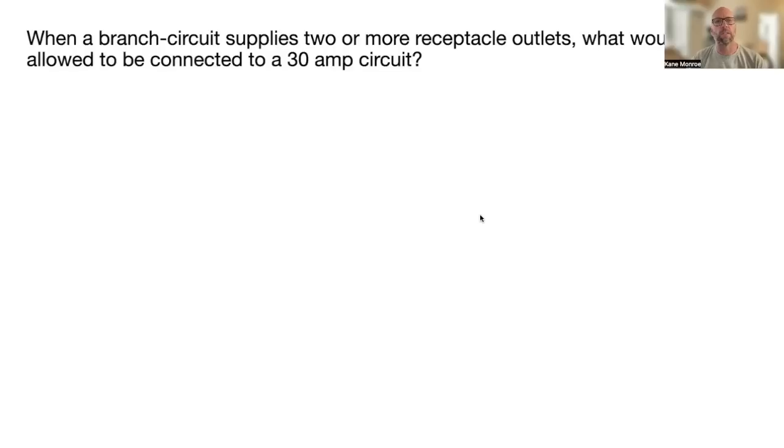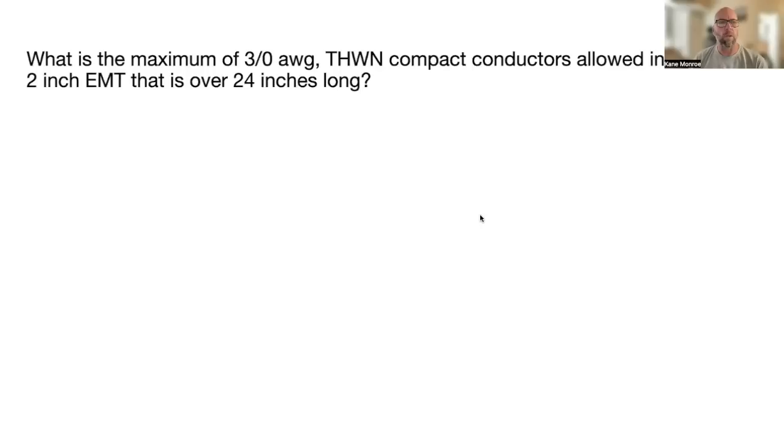When a branch circuit supplies two or more receptacle outlets, what would be allowed to be connected to a 30 amp circuit? A single 30 amp outlet. NEC 210.21(B)(3).